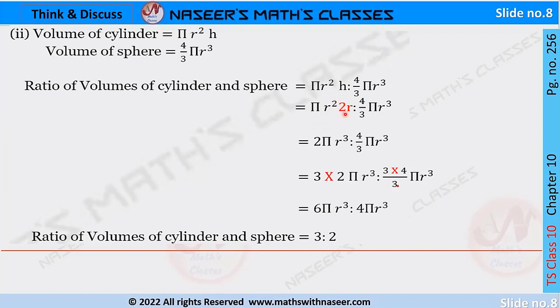We already know from the given problem that h = 2r. Then we get πr²(2r) : (4/3)πr³. Here r² × r gives r³, so the next step is written as 2πr³ : (4/3)πr³.